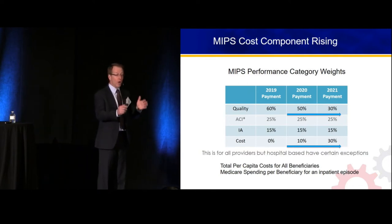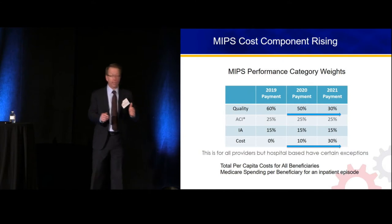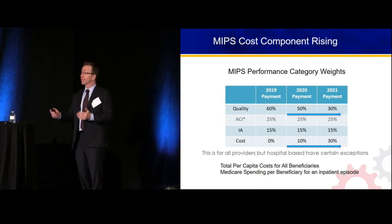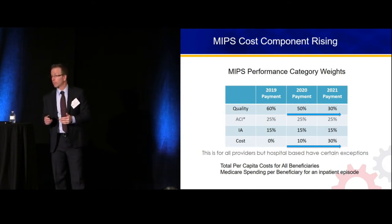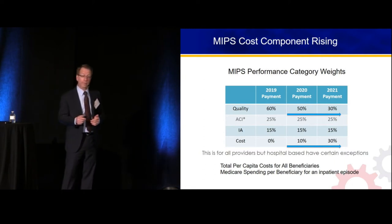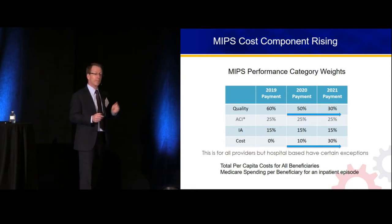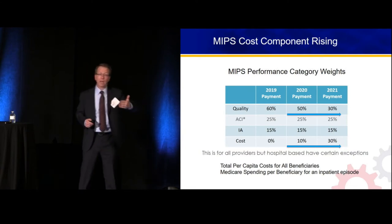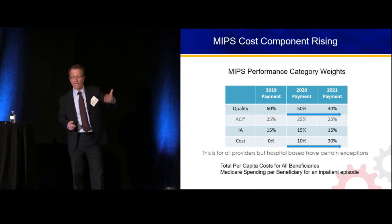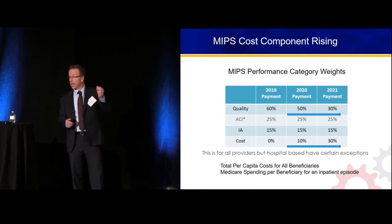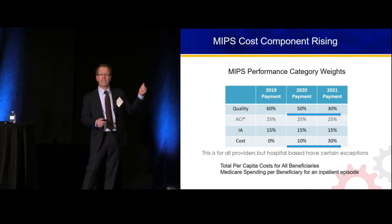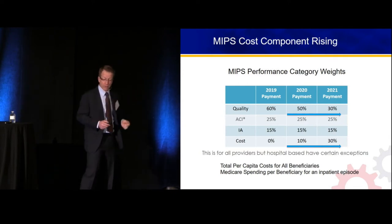What we do right now, today, and report to the federal government — or what they derive independently from our claims, which is the way the cost component is scored — impacts the way we'll be paid in 2020. If you look at an explanation of benefits right now in 2018, your group has its own conversion factor which was adjusted up or down a hair based on how you did in 2016.